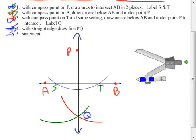Now we need to make our statement. We have line PQ is perpendicular to line AB.